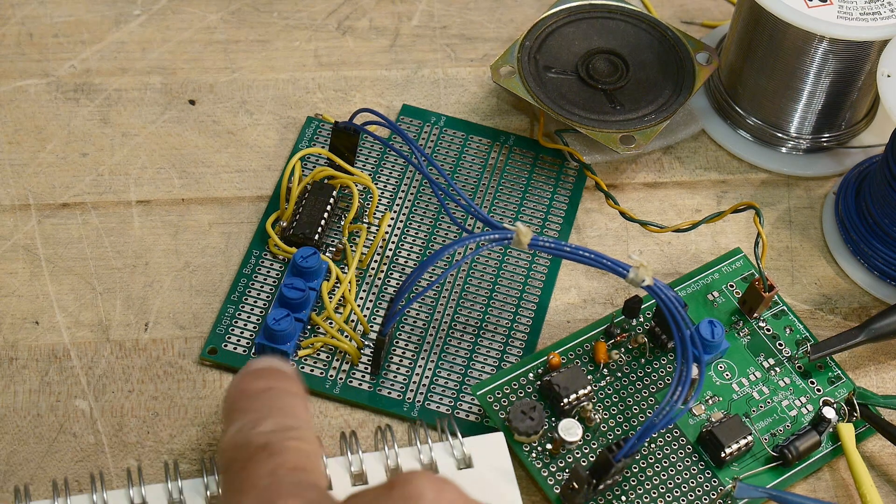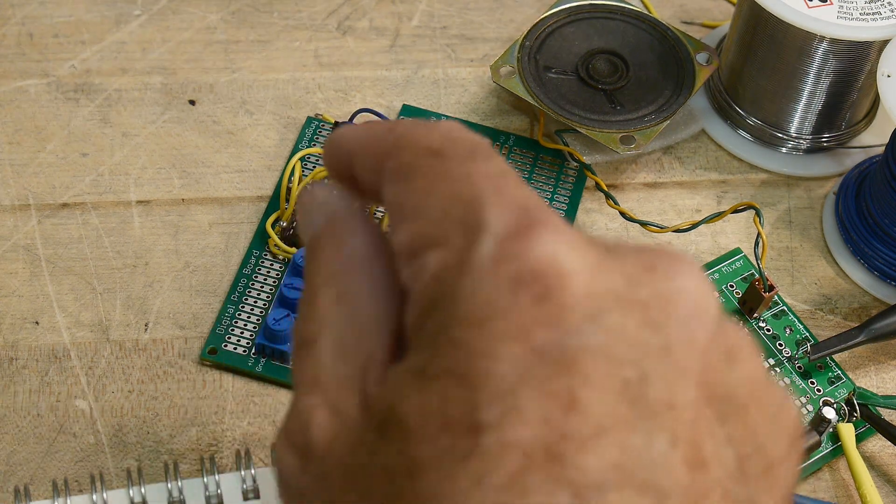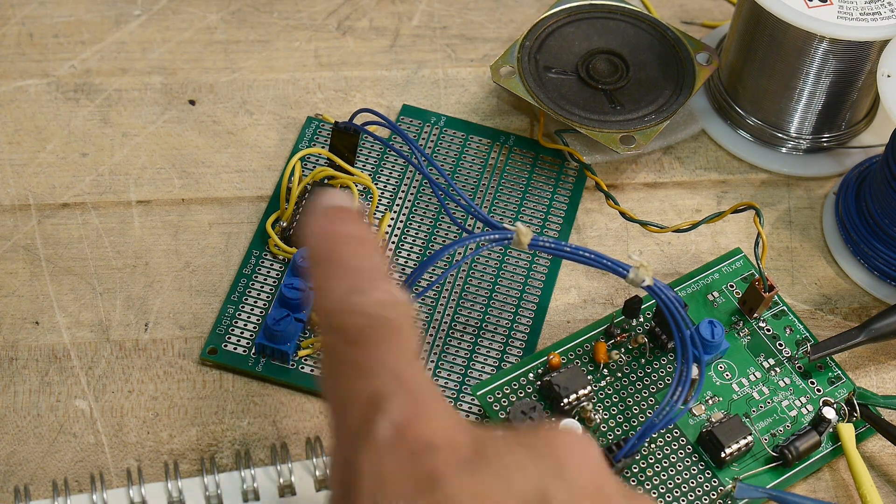All right, so this is what our little circuit board ended up looking like. It's got three potentiometers for a volume of each channel, and then an output.